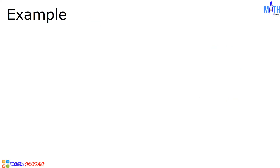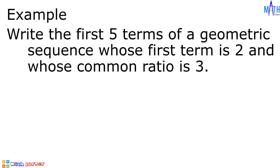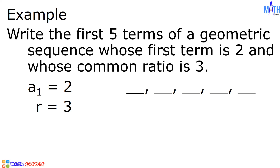Last example: let us write the first five terms of a geometric sequence whose first term is 2 and whose common ratio is 3. A sub 1 is equal to 2, r is equal to 3, and we are asked to write the first five terms. Since the first term is given, we write it first, then multiply by the common ratio to determine each next term. A sub 2 is equal to 2 times 3; 2 is the first term, 3 is the common ratio.